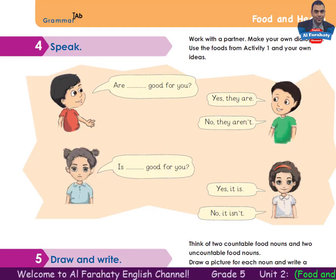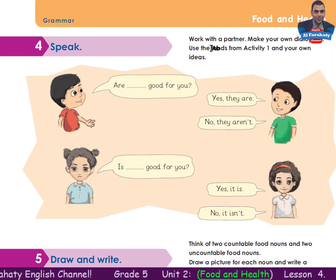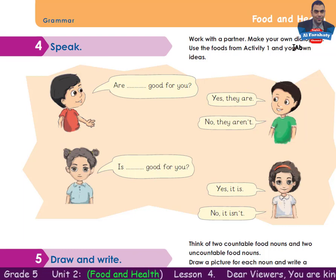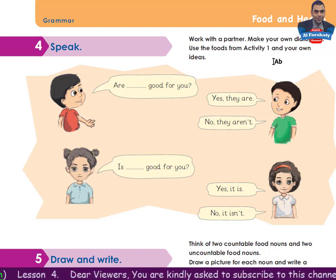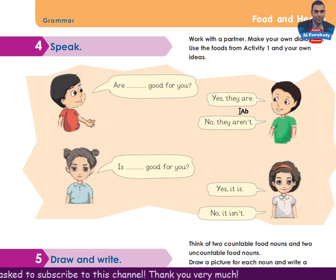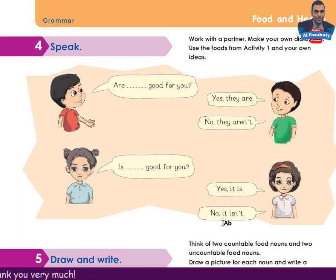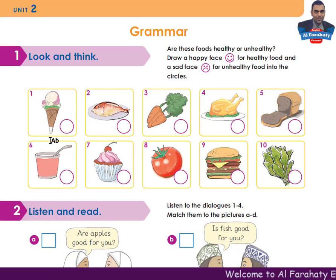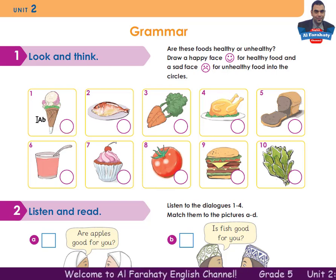Activity 4, Speak. Work with a partner and make your own dialogues using the foods from activity 1 and your own ideas. Use: Are... good for you? Yes, they are. / No, they aren't. Or: Is... good for you? Yes, it is. / No, it isn't. Let me make some dialogues: Is ice cream good for you? No, it isn't. Is fish good for you? Yes, it is. Are carrots good for you? Yes, they are.